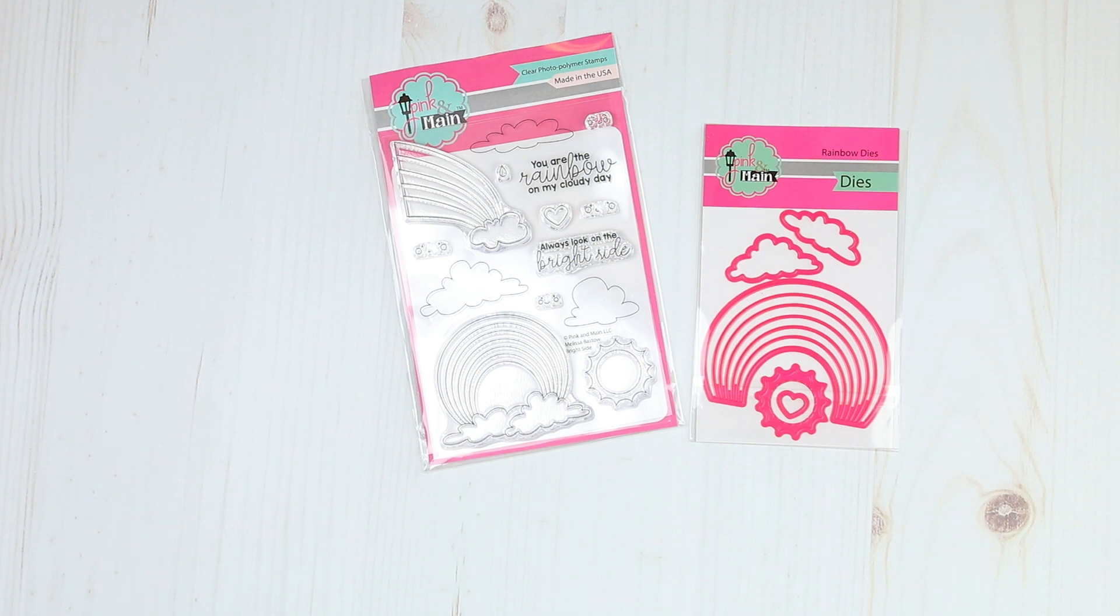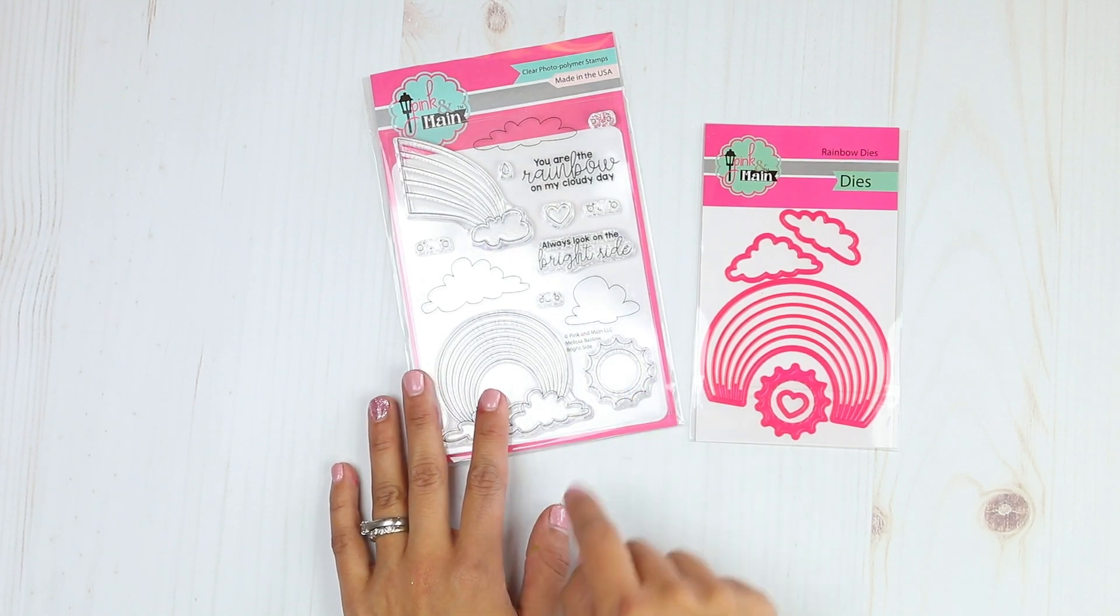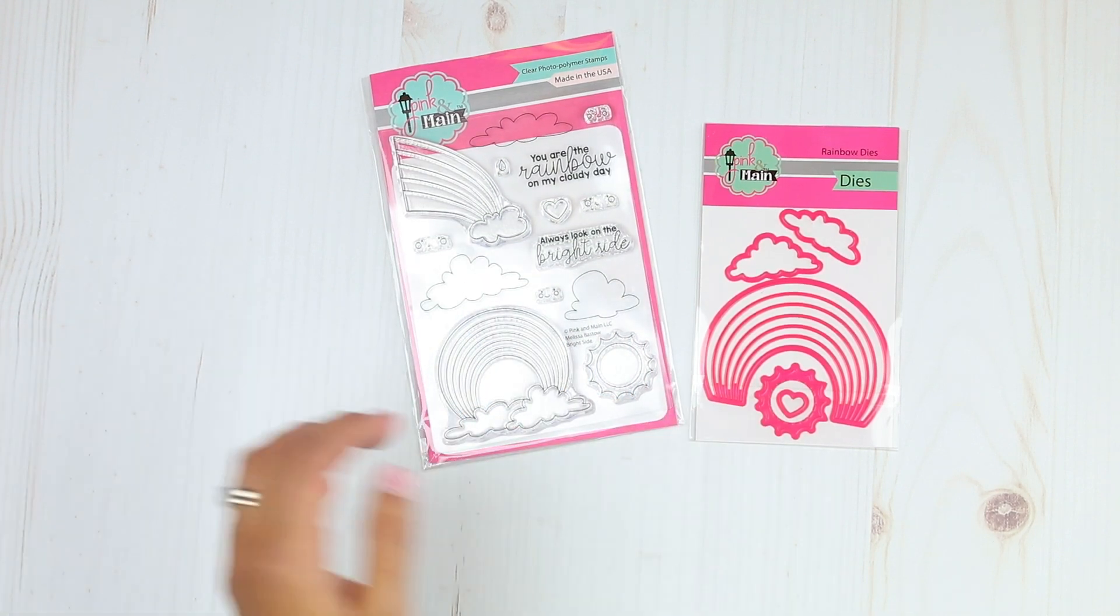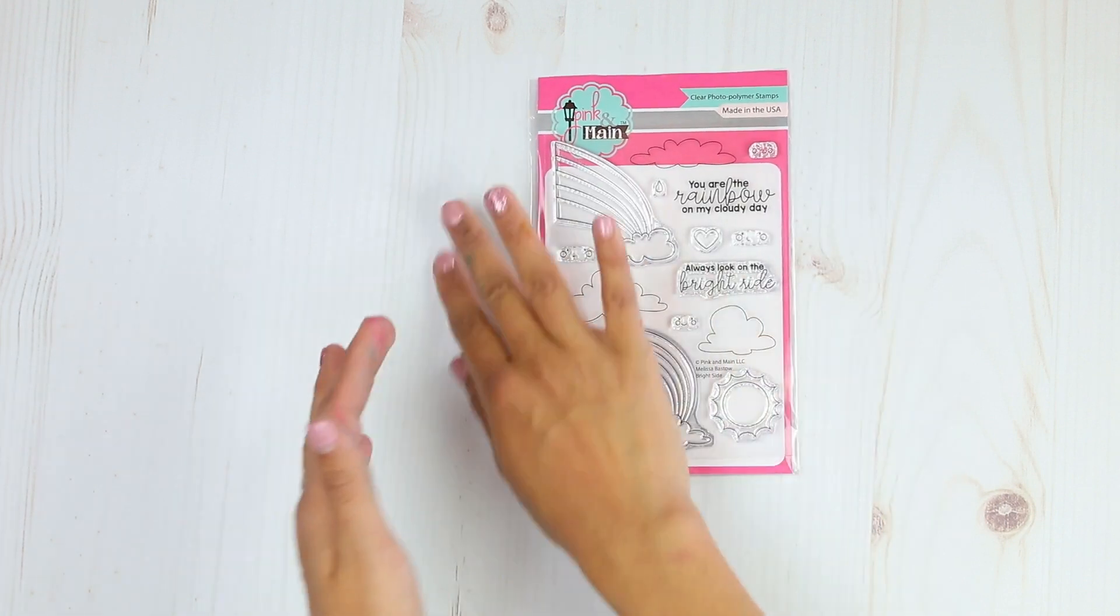Hey guys, Crystal Thompson here for Pink and May. Today we are creating a gorgeous rainbow card using the brand new release Bright Side. We're going to be using the different clouds along with the coordinating rainbow dies. So let's get started.